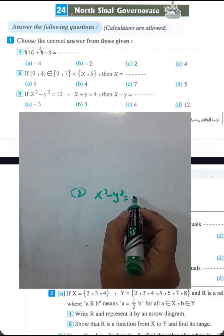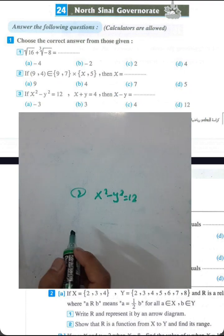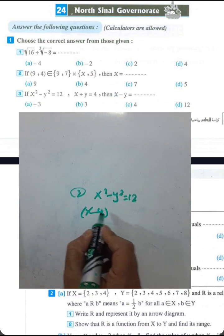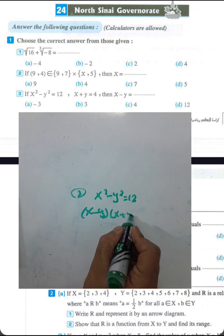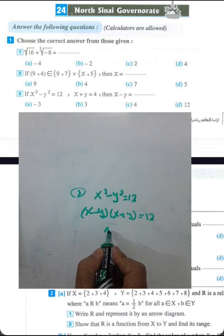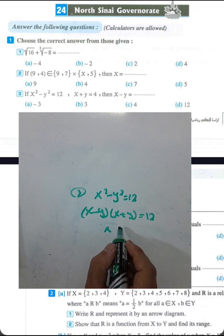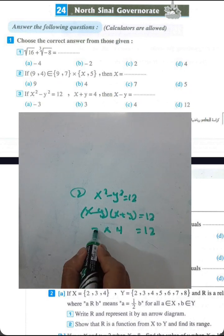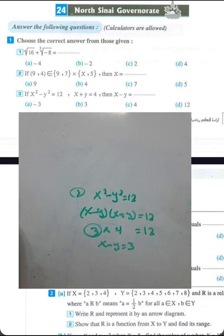Version number 3: x squared minus y squared equals 12. We can factorize this expression as (x minus y) multiplied by (x plus y) equals 12. They give us the value of (x plus y) as 4, so 4 times 3 equals 12, then x minus y equals 3.